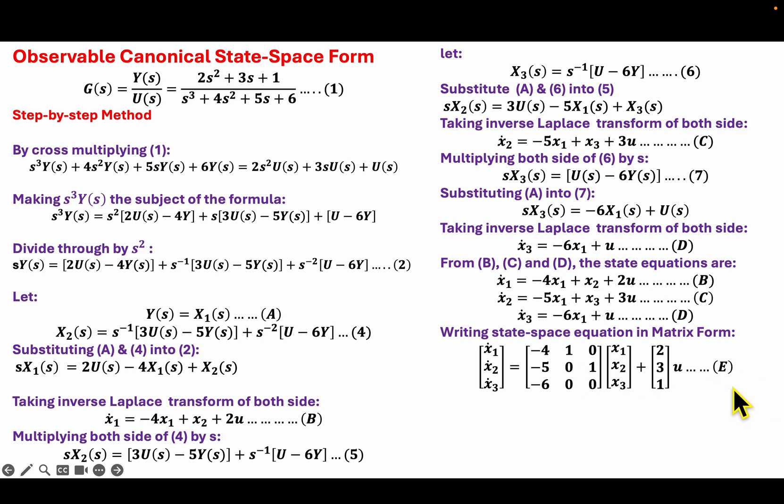So for my output, I will go back to A, which is Y(s) is just X₁(s), and taking the inverse Laplace transform, I will obtain y equals X₁. Representing it in matrix form, I will have equation F. So E and F give me my observable canonical state-space form.